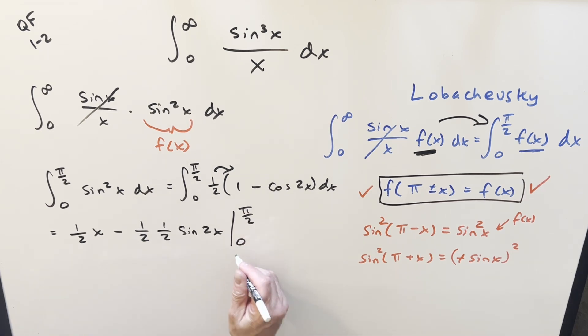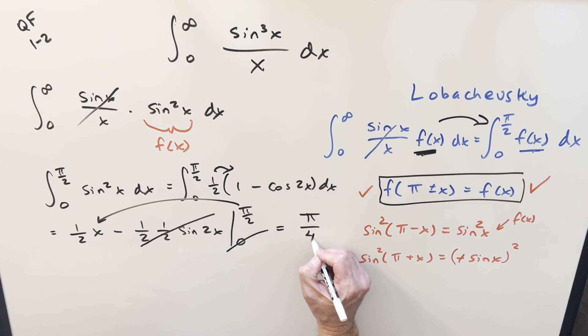But when you plug in 0, you get 0s everywhere. You plug pi over 2 in here. 2 times pi over 2 is just pi. This part goes away completely. We just need to plug pi over 2 in here. Multiplying pi over 2 times 1 half for my final solution of this, we just get pi over 4.